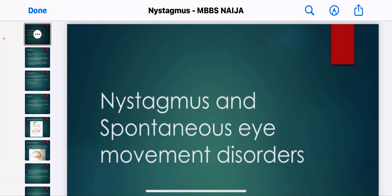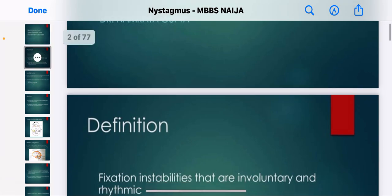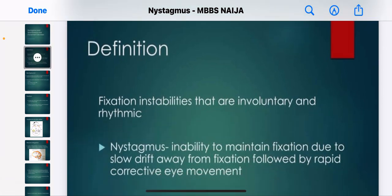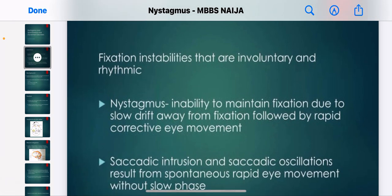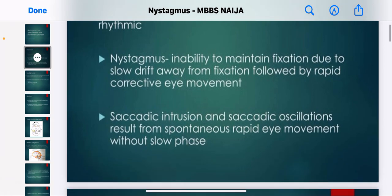Nystagmus is the inability to maintain a specific eye position. It involves fixation instabilities that are involuntary or rhythmic. Nystagmus is the inability to maintain fixation due to slow drift away from fixation followed by rapid and corrective eye movement. Saccadic intrusion and saccadic oscillation result from spontaneous rapid eye movement without a slow phase.